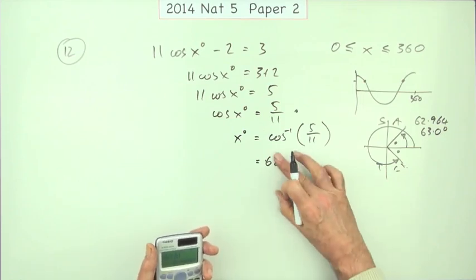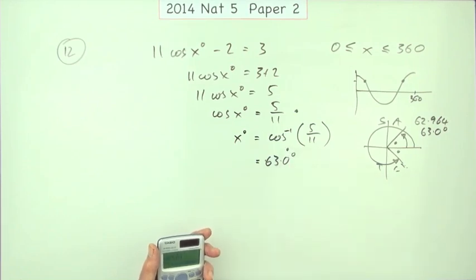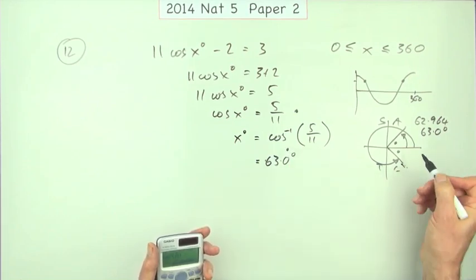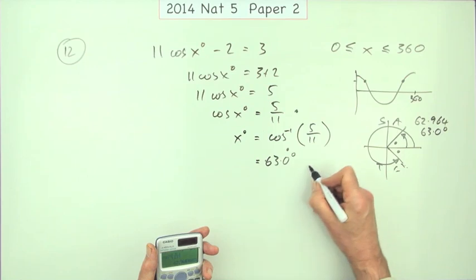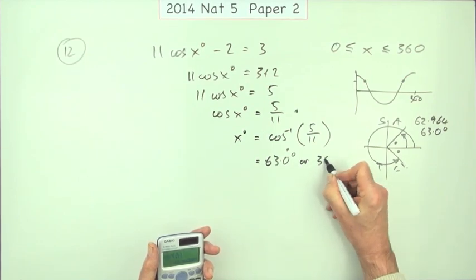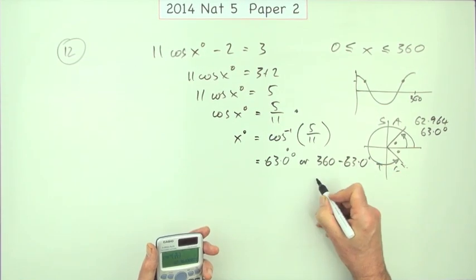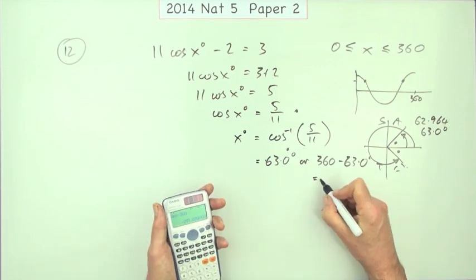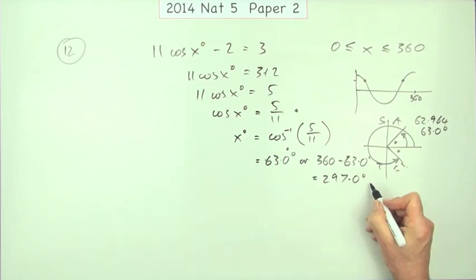Or you might get away just with saying 63.0. So 63.0, that's worth a mark. The other one would be taking that from 360 to find the other one. Equals that or maybe I'll put the working down 360 minus 63.0 which equals 297.0 degrees. That's your third mark.